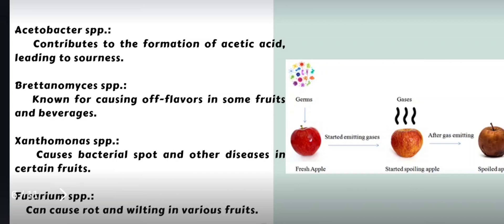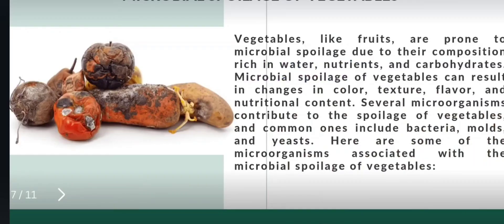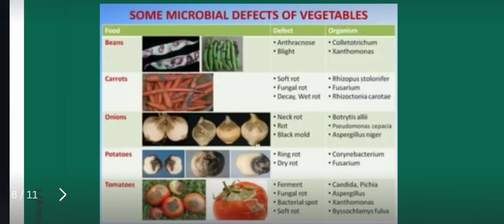Moving on to vegetables — similar to fruits, vegetables are prone to microbial spoilage due to their composition, which is rich in water and nutrients such as carbohydrates, proteins, and vitamins. Along with this composition, texture, color, and flavor also play an important role in the microbial spoilage of vegetables.